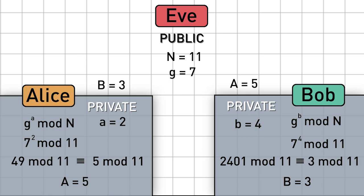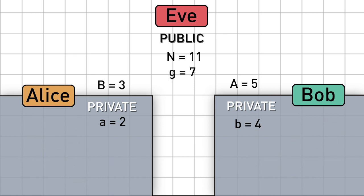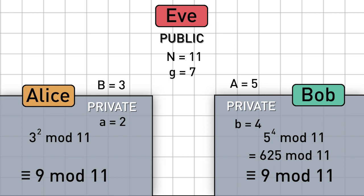And now the magic. Step 4. Alice and Bob each raise the other's publicly transmitted number to the power of their own private number mod n. And check it out. In mod 11 arithmetic, they both end up with 9.